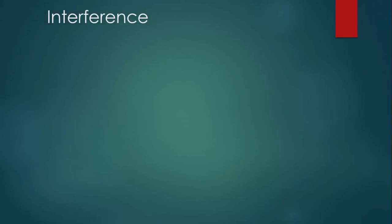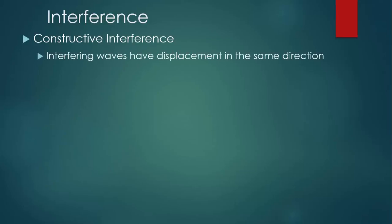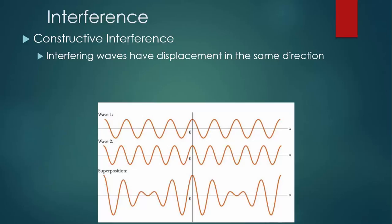We've just observed both types of interference. The first type is called constructive interference. This is when the interfering waves have displacement in the same direction. You can see in this diagram that wave one and wave two have displacement in the same direction, and this results in constructive interference. Think of constructive as like building something bigger and bigger.